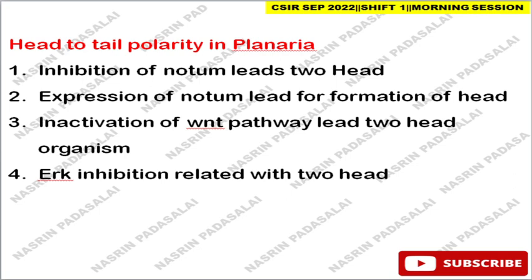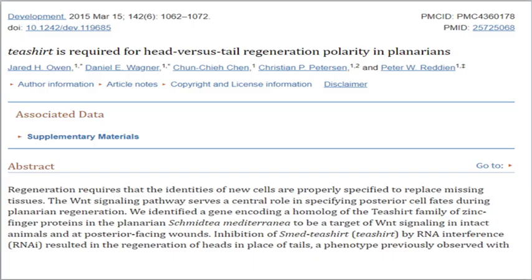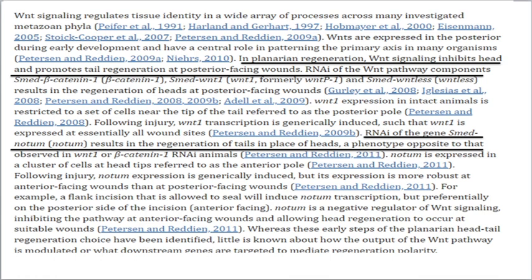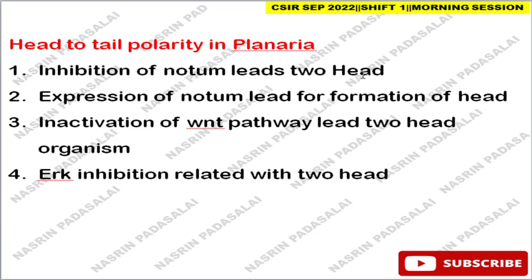The first question is about head-to-tail polarity in planaria. In planarian regeneration, Wnt signaling inhibits head formation and promotes tail regeneration at a posterior-facing wound. When they inhibit the NOTUM gene using RNAi technology, it results in regeneration of tail in the place of head. So the option 'inhibition of NOTUM leads to two heads' is a wrong option.